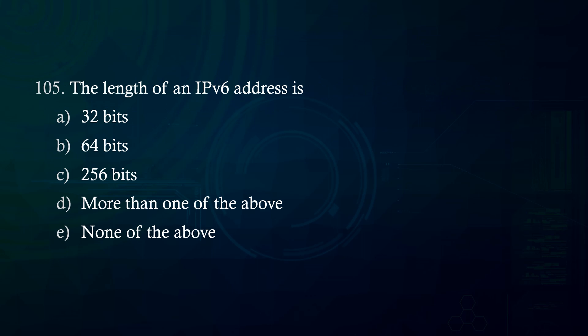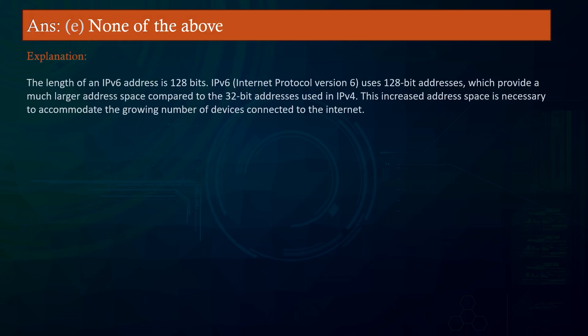The length of an IPv6 address is: A. 32 bits. B. 64 bits. C. 256 bits. D. More than one of the above. E. None of the above. Answer: None of the above. Explanation: The length of an IPv6 address is 128 bits. IPv6 uses 128-bit addresses, providing a much larger address space compared to the 32-bit addresses in IPv4, necessary to accommodate the growing number of internet-connected devices.